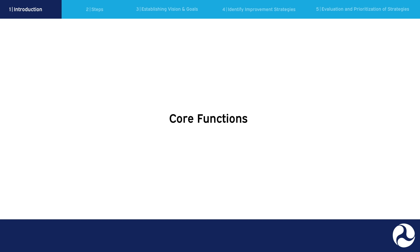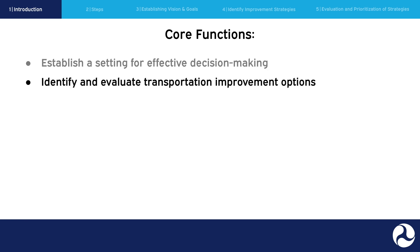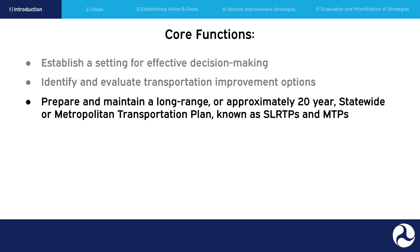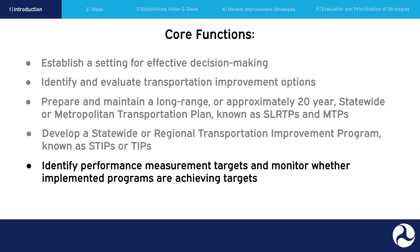If you are involved with the transportation planning process, you will want to make sure that the process, at a minimum, covers the following six core functions: establish a setting for effective decision making; identify and evaluate transportation improvement options; prepare and maintain a long-range, or approximately 20-year, statewide or metropolitan transportation plan, known as SLRTPs and MTPs; develop a statewide or regional transportation improvement program, known as STIPs or TIPs; identify performance measures and targets, and monitor whether implemented programs are achieving targets; and involve the public.